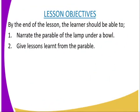We start with our lesson goals — what is expected of the learner by the end of this lesson. By the end of the lesson, the learner should be able to: one, narrate the parable of the lamp under a bowl; and two, give lessons to learn from the parable.